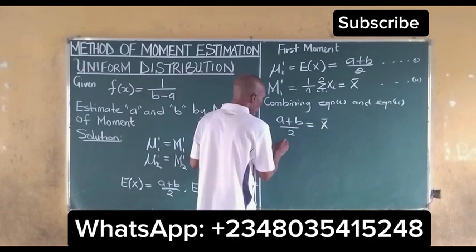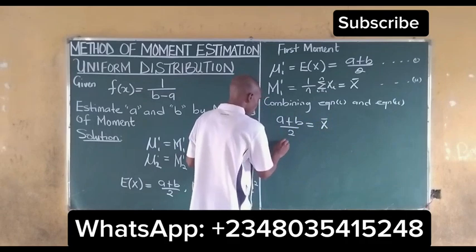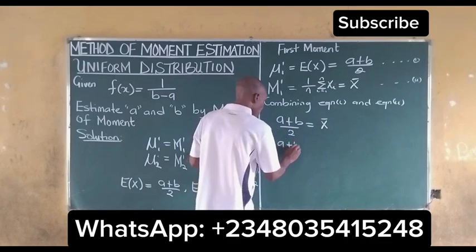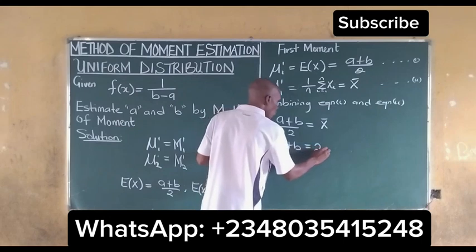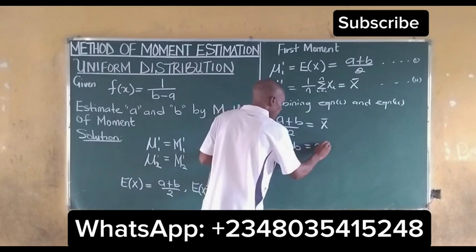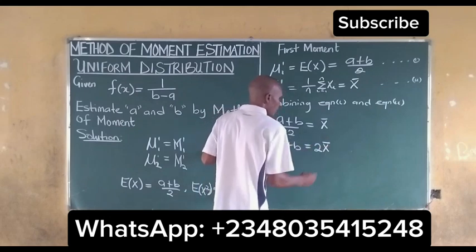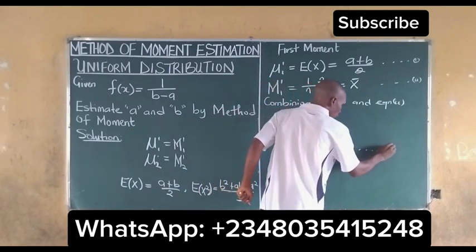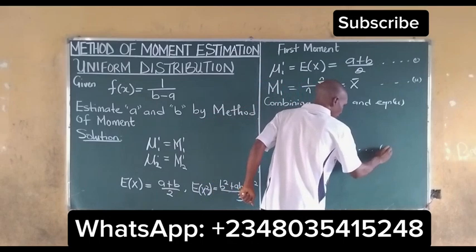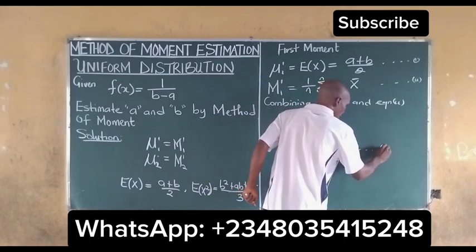Combining equation (i) and equation (ii), we get (A + B) / 2 = x̄, which also means that A + B = 2x̄. Let's call this our equation (star), because we will use it later.